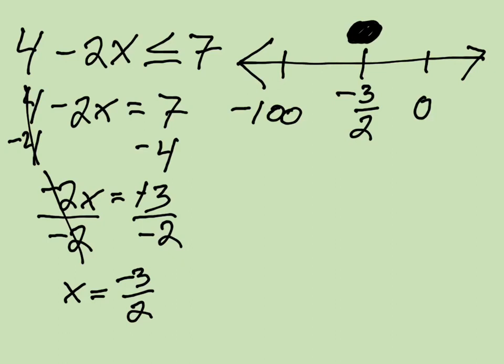4 minus 2 times negative 100. Well, negative 2 times negative 100 is a really big positive number. 4 minus 2 times negative 100 comes out to be a really big positive number, because if I take negative 2 times negative 100, I get positive 200, add that to the 4, I get 204. But that could have been 1,000 or 10,000. Whatever that negative number will give us, a really big positive number on the left side of the inequality. And is it true that a really big positive number is less than or equal to 7? No, that's false.